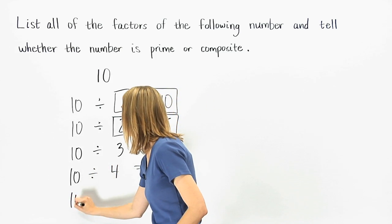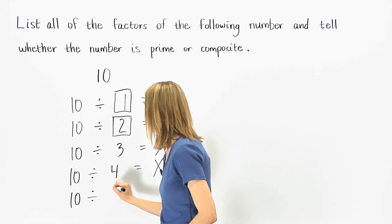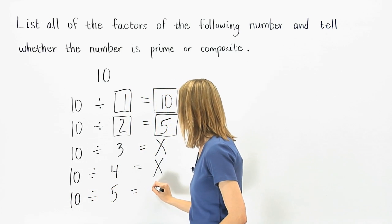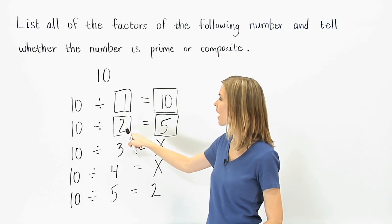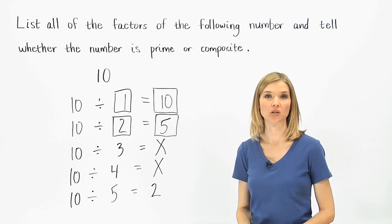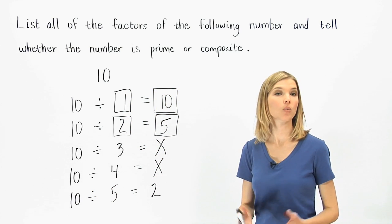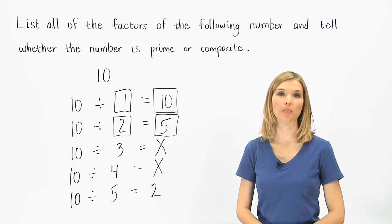Next, divide 10 by 5, which gives us 2. But notice that 5 and 2 are repeat factors. Once we hit repeat factors, all other factors we try will repeat. So we can stop here.